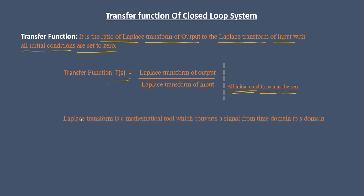Let us also have a look at a simple definition of Laplace transform. The Laplace transform is a mathematical tool which converts a signal from the time domain to the s-domain. For example, if you have a signal x(t) in the time domain and take the Laplace transform, you get X(s). Similarly, if you have a signal r(t) and take its Laplace transform, you get R(s).